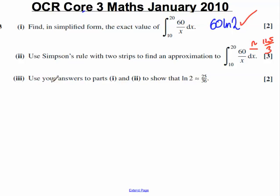Part III, very straightforward question. Use your answers to part I and part II to show that ln 2 is approximately 25 over 36.